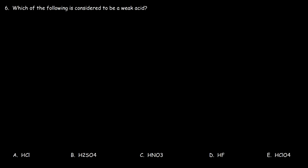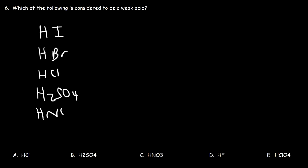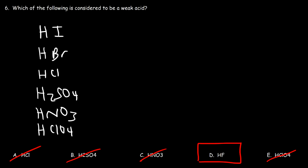Number 6: which of the following is considered a weak acid — HCl, H2SO4, HNO3, HF, or HClO4? It pays to know the six common strong acids: HI, HBr, HCl, H2SO4, HNO3, and HClO4. If an acid is not one of these six, it's safe to say it's a weak acid. HCl, H2SO4, HNO3, and HClO4 are all strong. Therefore, the weak acid is HF, hydrofluoric acid.